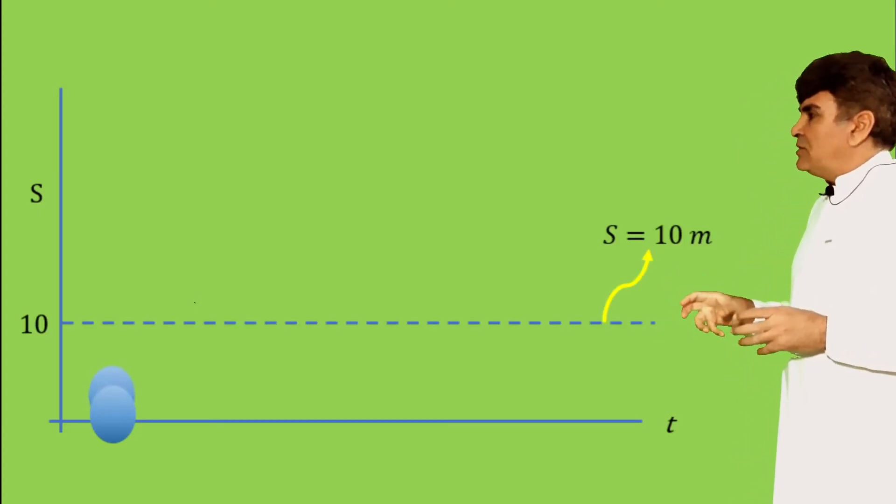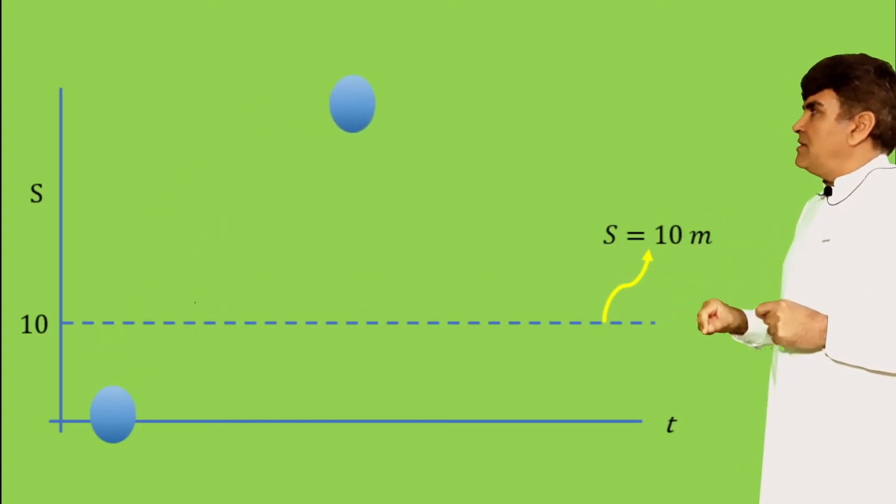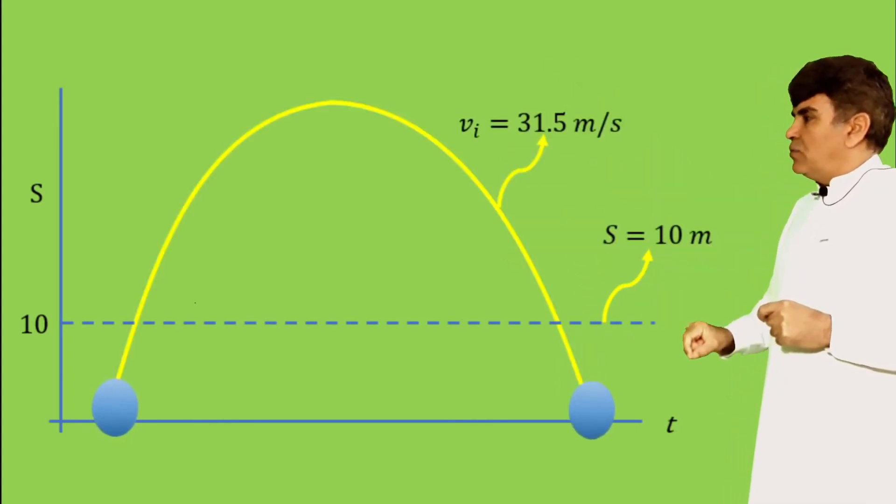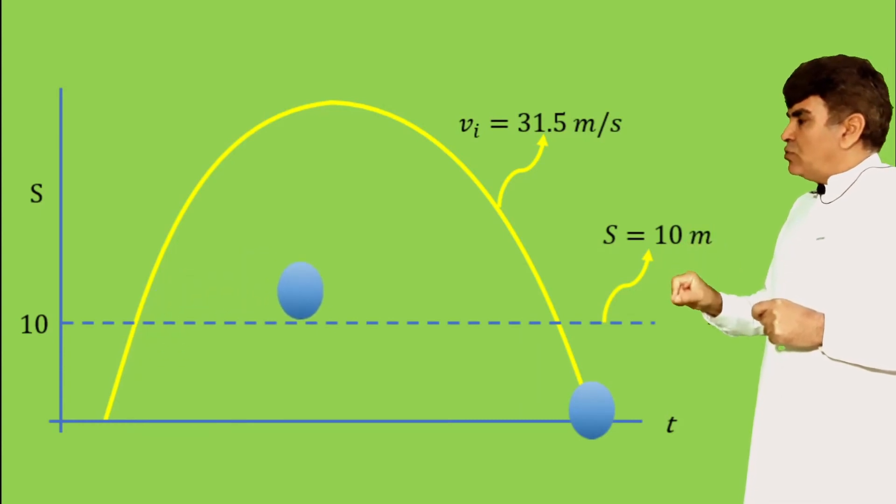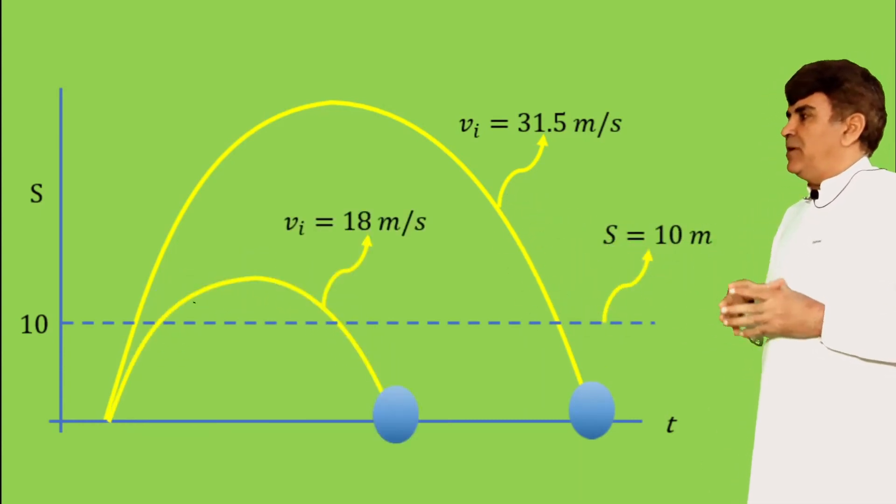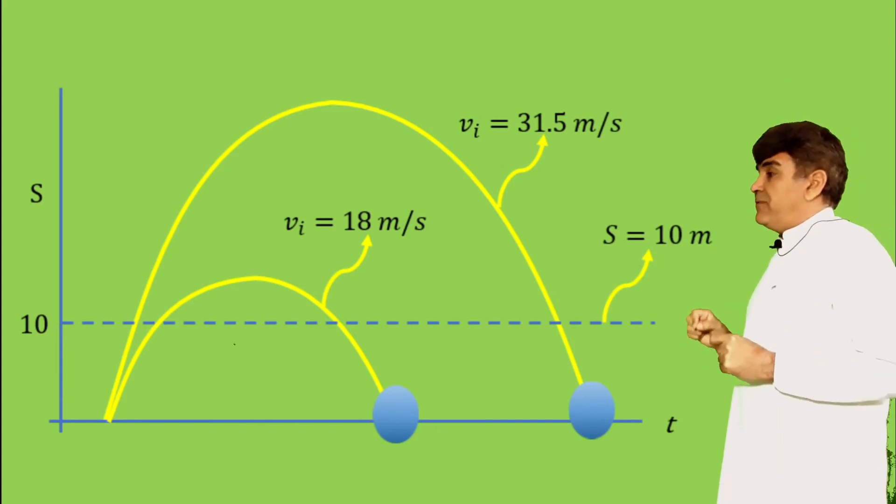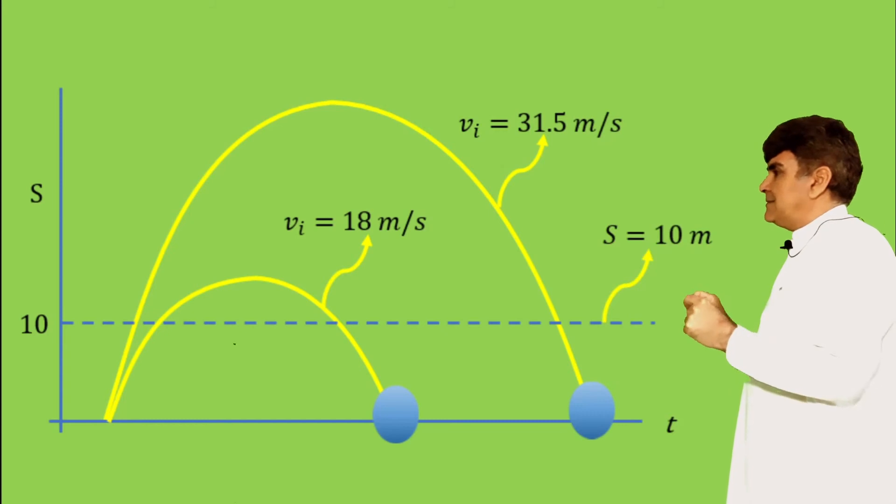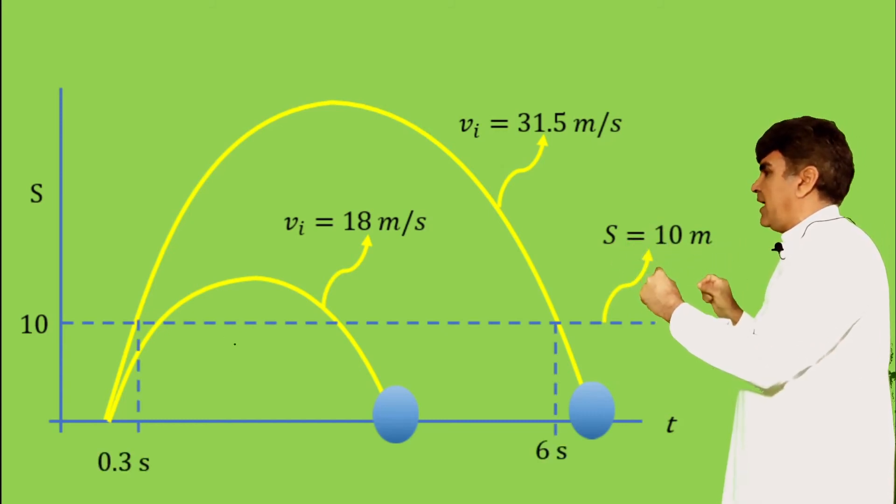The first ball thrown with 31.5 meters per second goes along this large parabolic path. And the second one thrown with 18 meters per second goes with this small parabolic path.